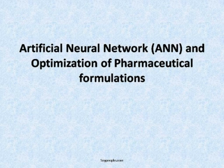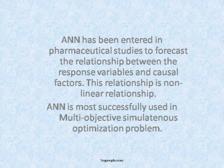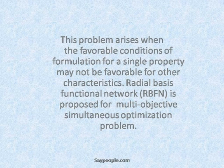Artificial neural networks (ANN) and optimization of pharmaceutical formulations. ANN has been applied in pharmaceutical studies to forecast the relationship between the response variables and causal factors. This relationship is a non-linear relationship. ANN is most successfully used in multi-objective simultaneous optimization problems, which arise when favorable conditions for one property may not be favorable for other characteristics.